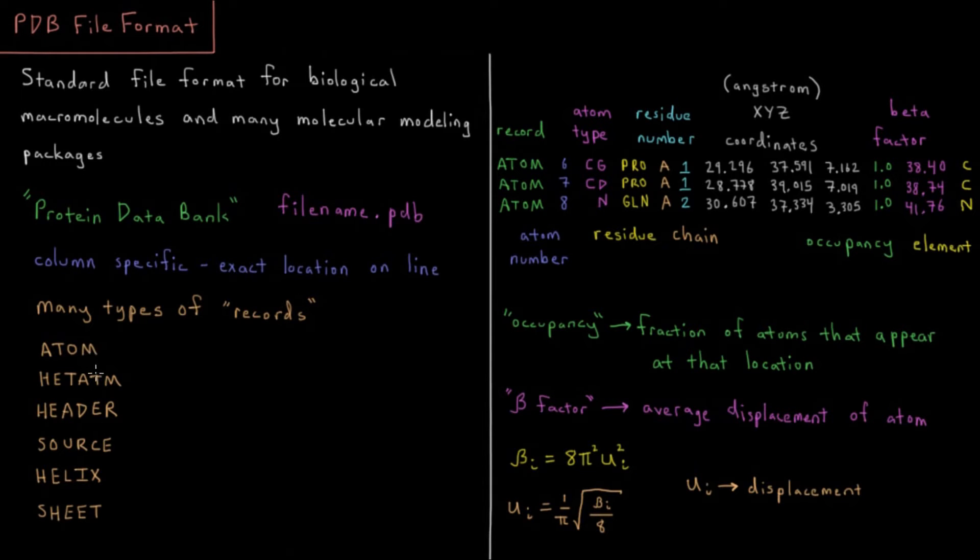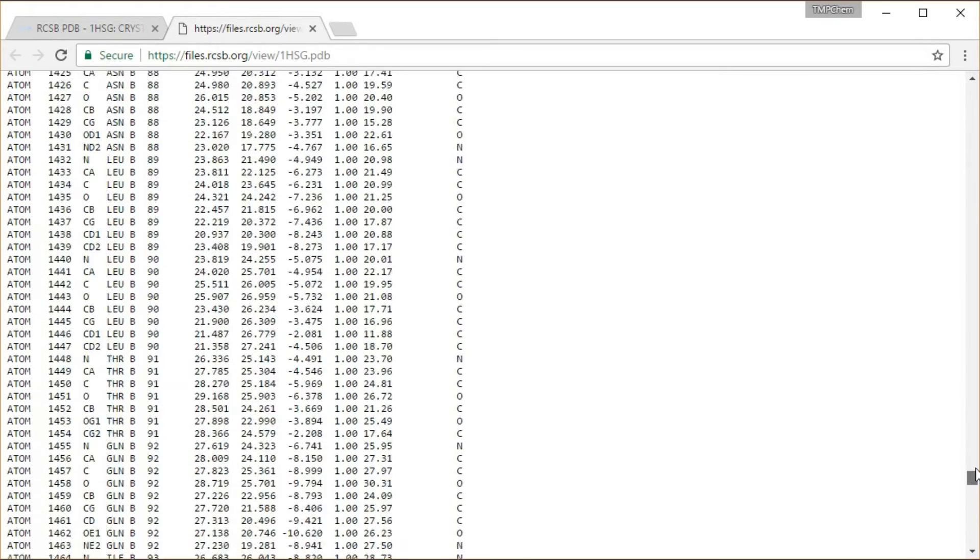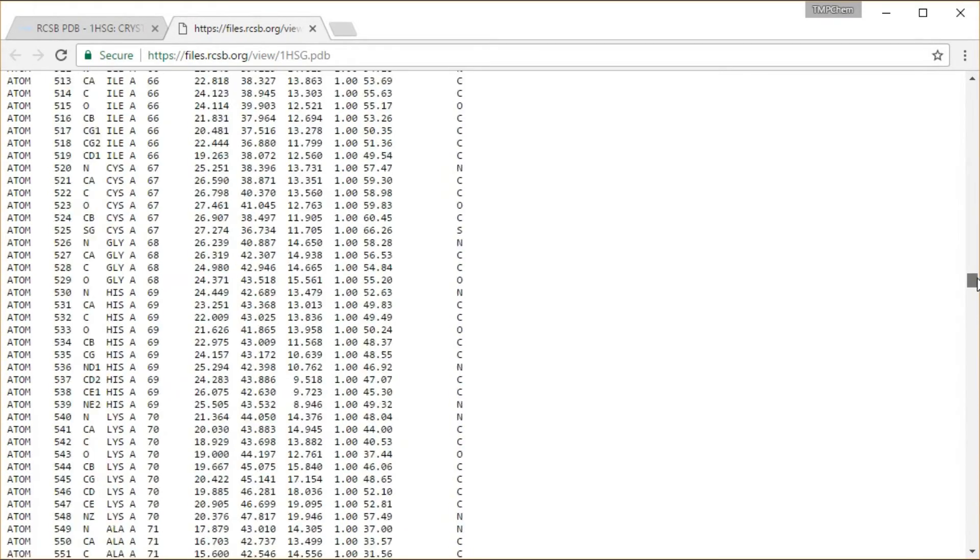The most interesting records for our purposes are going to be atom records. They're going to start with the word atom. In this case there are about 1600 of those in this particular file.